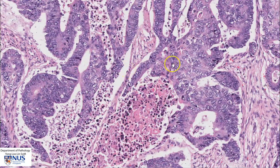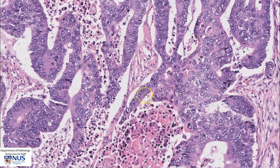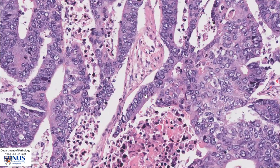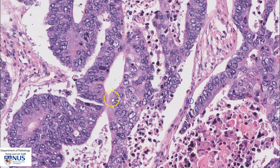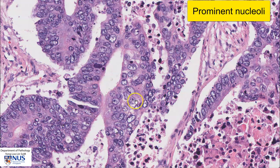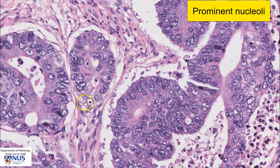The cells that line the glands appear to be columnar in shape, and there is a moderate degree of nuclear pleomorphism. We can see a moderate variation in nuclear size — some of the nuclei are rounder whereas others are more irregularly shaped. The nuclei also show prominent nucleoli, and you can see examples here.